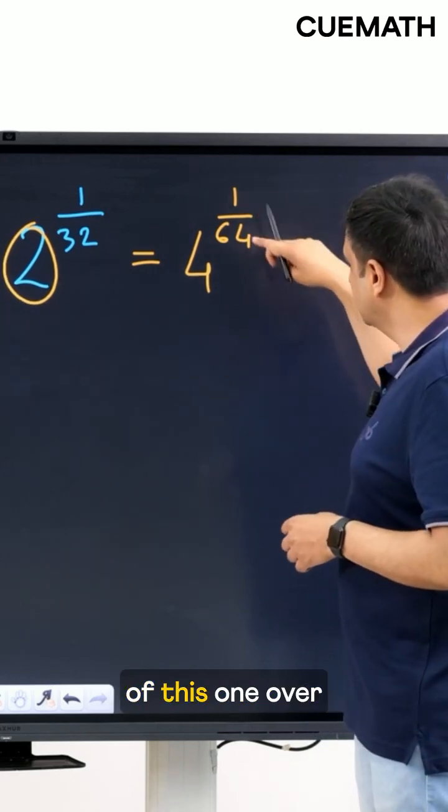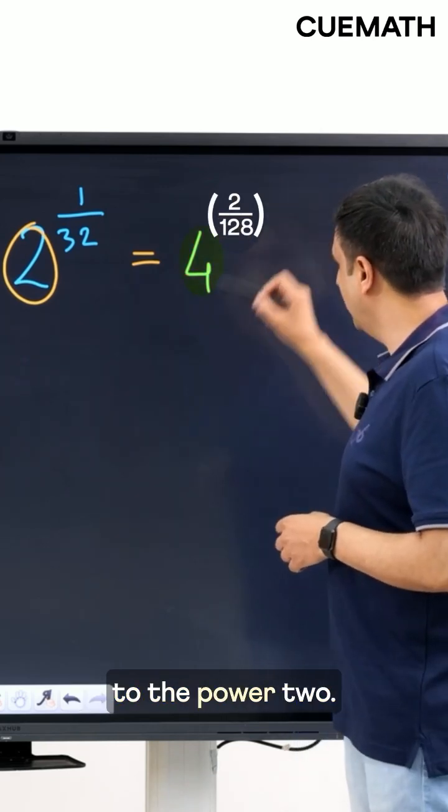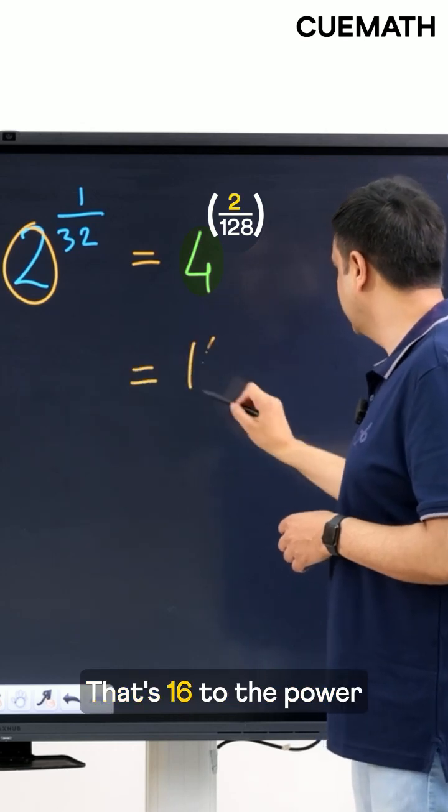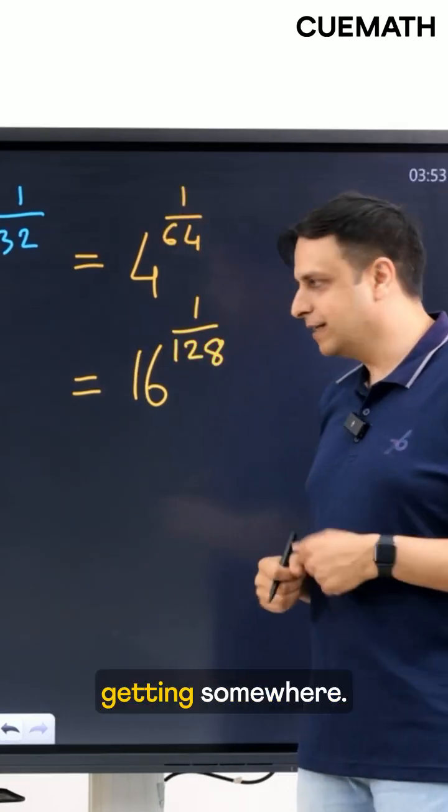Now I'll again think of this 1 over 64 as 2 over 128 and that'll give me 4 to the power 2 that's 16 to the power 1 over 128. All right it seems like we're getting somewhere.